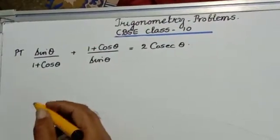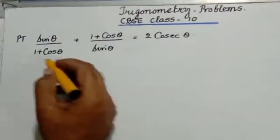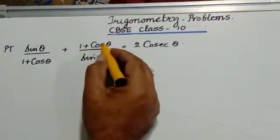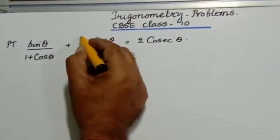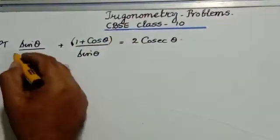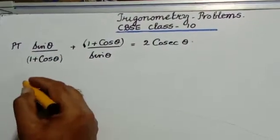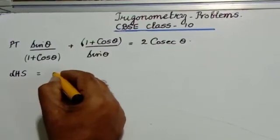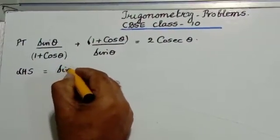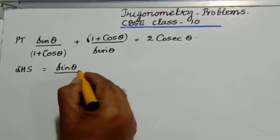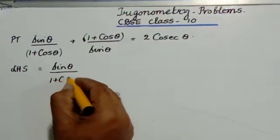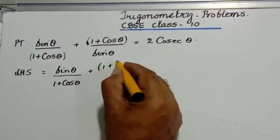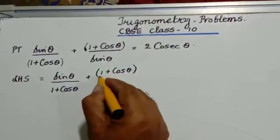The next problem: prove that sin theta divided by 1 plus cos theta, plus 1 plus cos theta divided by sin theta, is equal to 2 cosecant theta. This is what I am supposed to prove. Let us start from the left hand side: sin theta divided by 1 plus cos theta, plus 1 plus cos theta divided by sin theta.